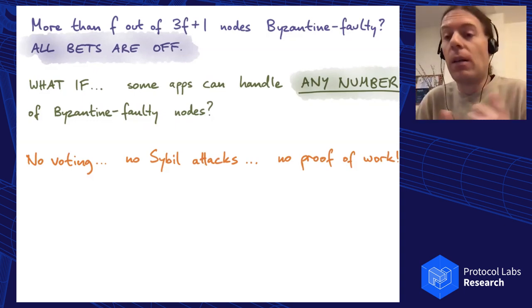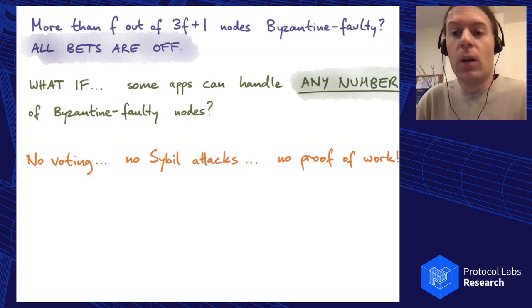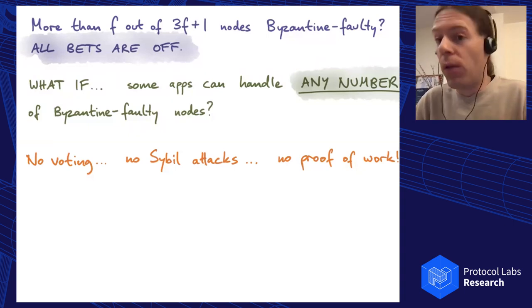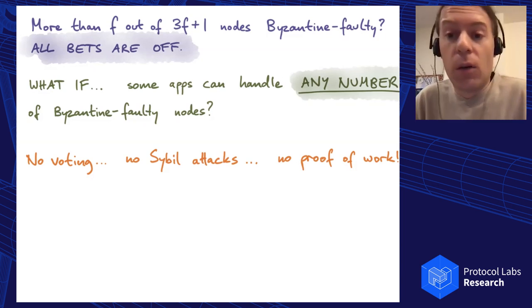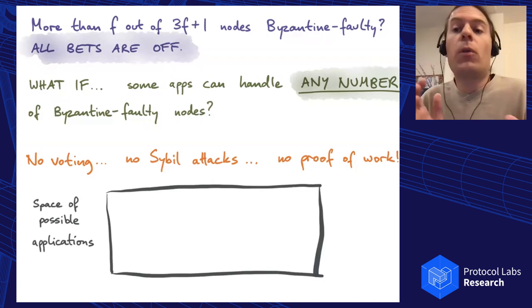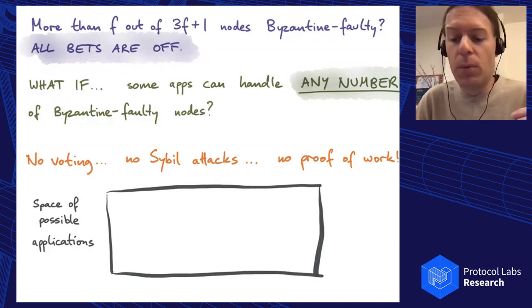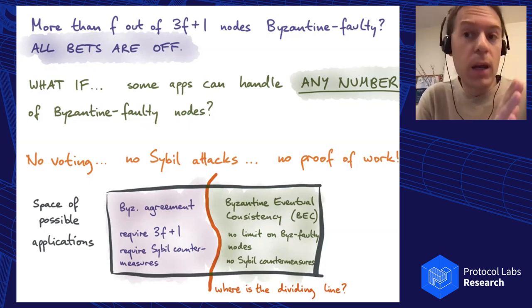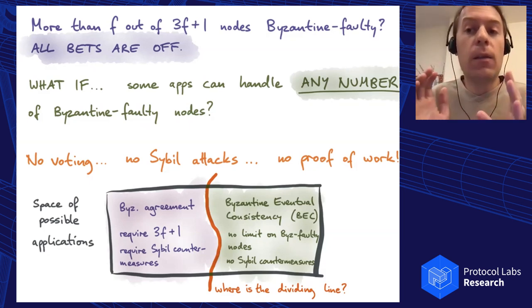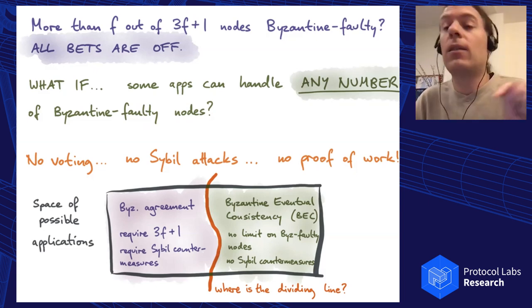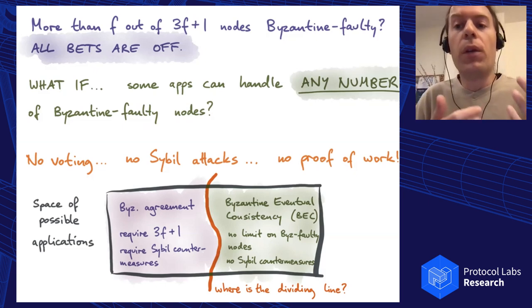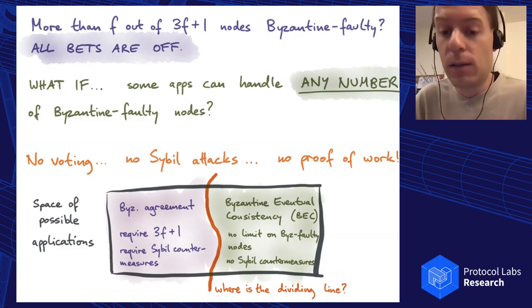This won't be cryptocurrencies or things like that—they clearly need this limit. But it would be really nice if we can characterize exactly which applications can tolerate arbitrary numbers of malicious nodes because they then don't need Sybil attack countermeasures, voting, or proof of work. We want to figure out where's that dividing line between applications that require the 3F plus 1 and Sybil countermeasures, and the types that do not. Drawing that dividing line is the purpose of this work. We're introducing this term Byzantine eventual consistency for applications that can tolerate any number of Byzantine faulty nodes.